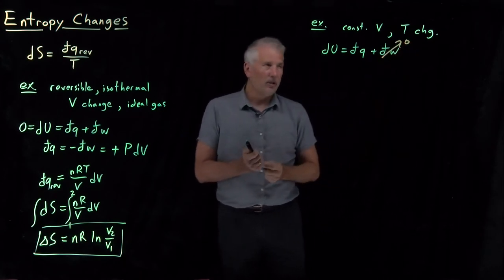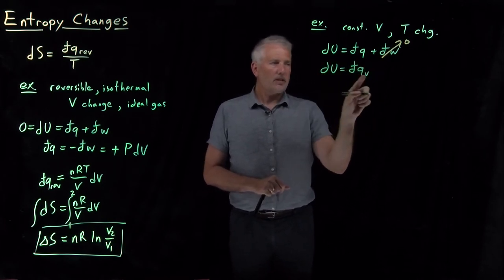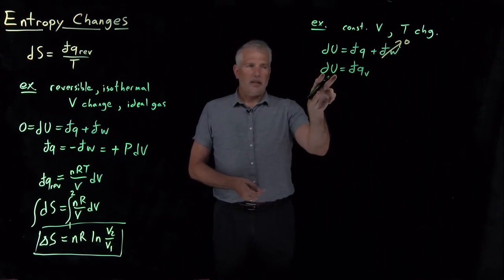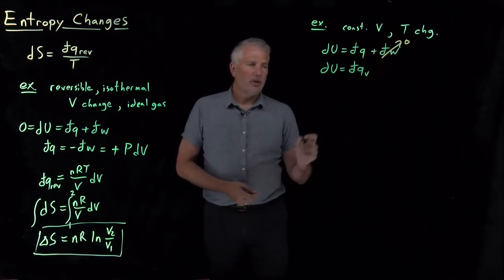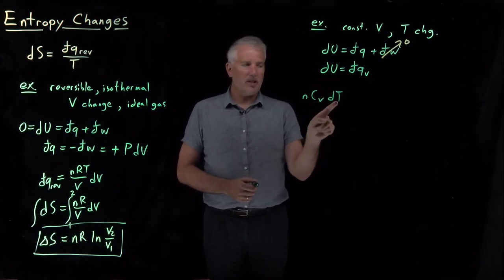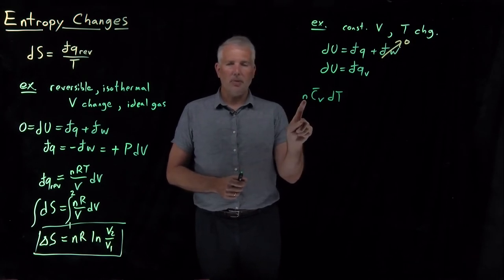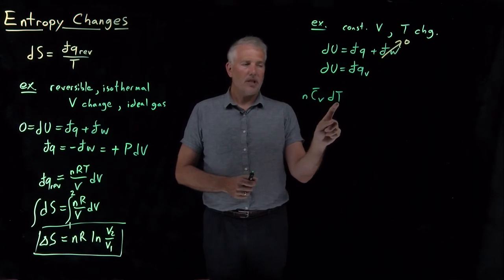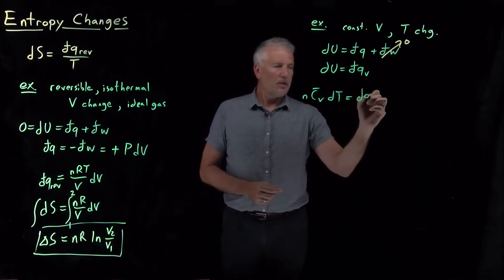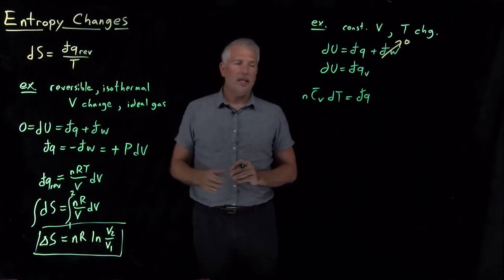So dW is going to be zero. At constant volume, heat is the same thing as internal energy — an equation we've used several times before. What we can say about the change in internal energy as I change the temperature is given by the heat capacity: either the extensive heat capacity or, as written here, the number of moles times the intensive heat capacity times the change in temperature. That gives us the change in internal energy, and that's equal to dQ.